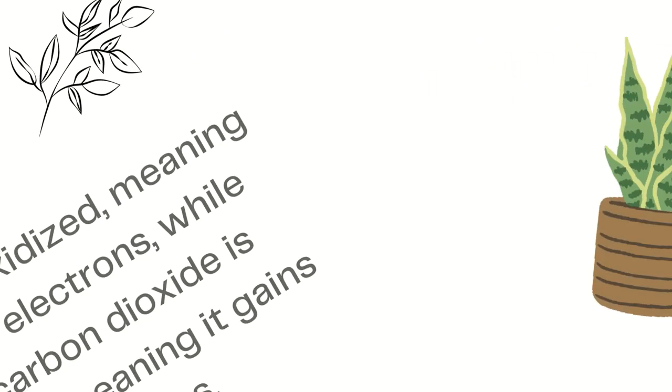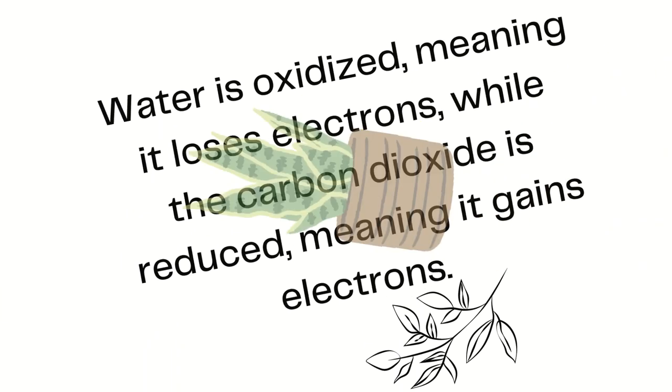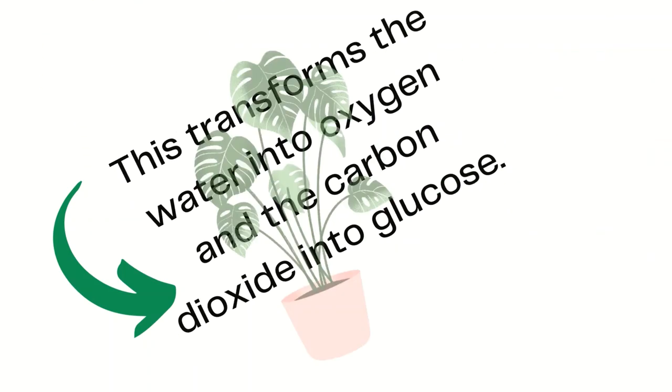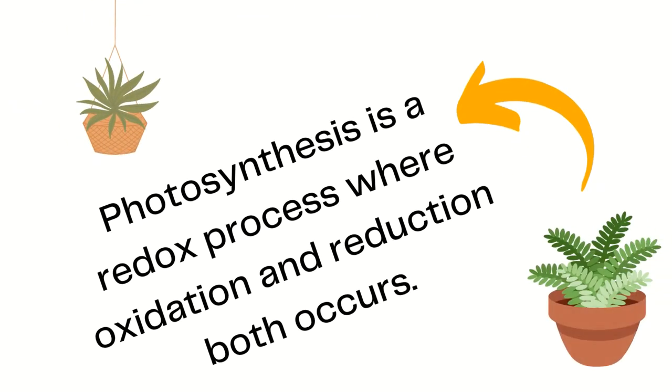Water is oxidized, meaning it loses electrons, while the carbon dioxide is reduced, meaning it gains electrons. This transforms water into oxygen and the carbon dioxide into glucose. Photosynthesis is a redox process where oxidation and reduction occur.